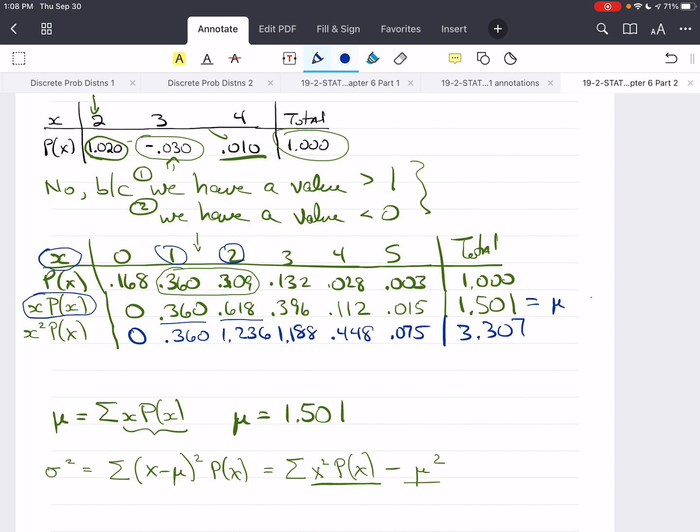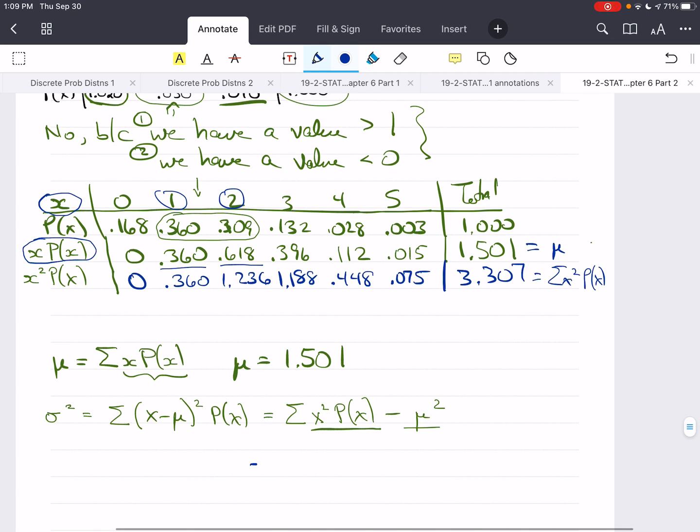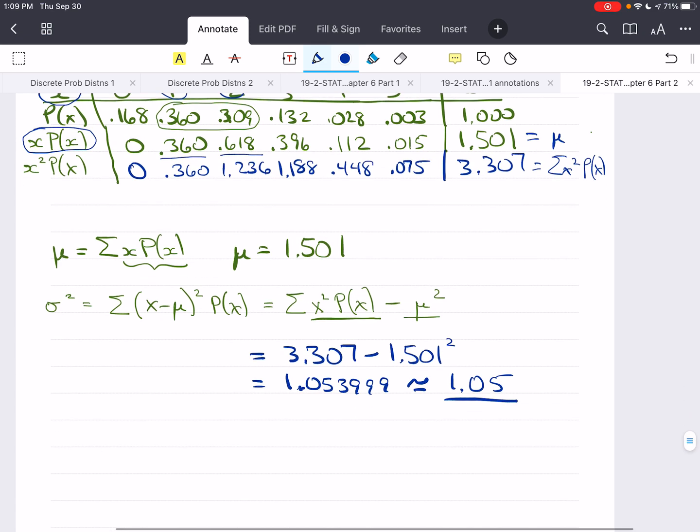So I've got 0.360 plus 1.236 plus 1.188 plus 0.448 plus 0.075 gives me 3.307. So, this is mu, and this is the sum of x squared P(x). Now, I can just plug that in to this equation, and that's going to be 3.307 minus mu 1.501 squared. Don't forget to do the square. So, minus 1.501 squared is going to give me 1.053999. I'm going to take this to 2 decimal places, 1.05. So, this is the variance.